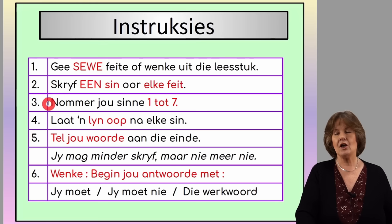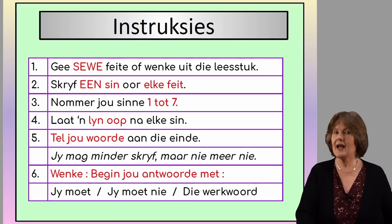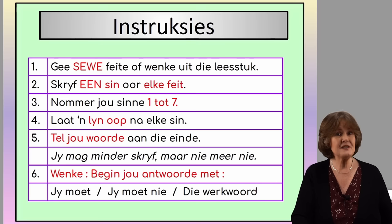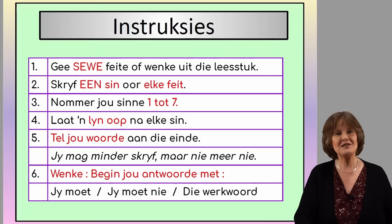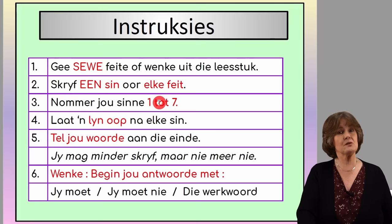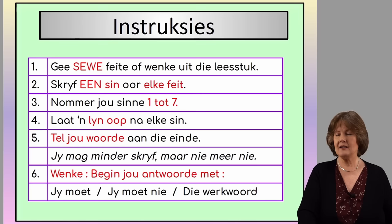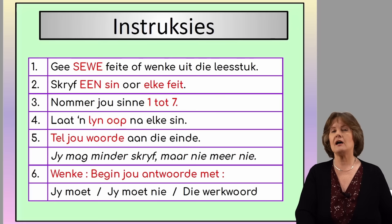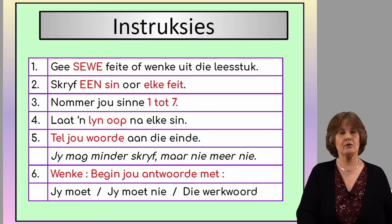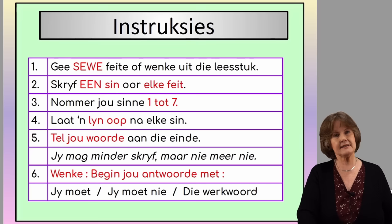You need to have seven sentences in the end, and you number your seven sentences. Be careful — they say puntsgewees. Puntsgewees means not in paragraph form. You need to number it one to seven. So you will have seven simple sentences with a line open in between, numbered one to seven, and each sentence will contain one fact. Then, at the end, you need to count your words and indicate it at the bottom. We usually ask you 60 or 70 words. You may go over by five, but not more than that. If you go over, we can only mark up to 65 or 75. You can also write less than 60 or 70 — even 40 words — but don't make it so short that you lose out on your facts.